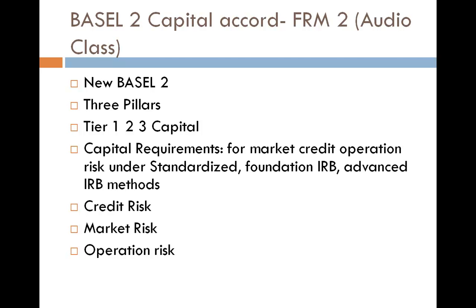Bank subsidiaries are reviewed as part of the whole banking group. However, the accord also calls on supervisors to evaluate subsidiaries' individual capital to assure that depositors of each subsidiary are fully protected. Parts of a banking group or holding operation that are in related businesses — for example, insurance and securities — should be consolidated as well. The capital should be adjusted to appropriately reflect the risk of these entities, so they cannot behave as independent entities outside the consolidated framework.